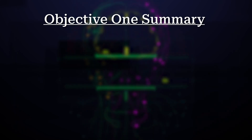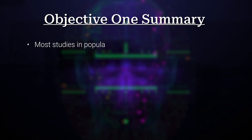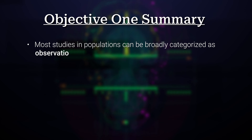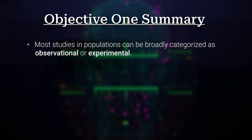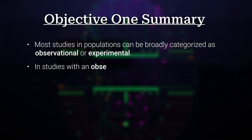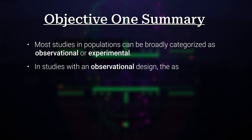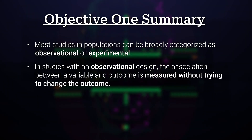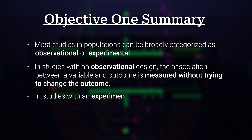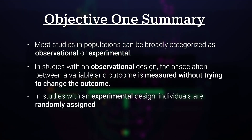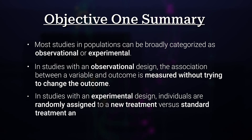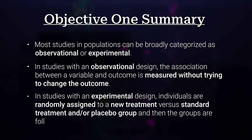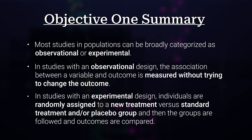Most studies in populations can be broadly categorized as observational or experimental. In observational designs, the association between a variable and outcome is measured without trying to change the outcome. In experimental designs, individuals are randomly assigned to a new treatment versus standard treatment and/or placebo, and then the groups are followed and outcomes are compared.